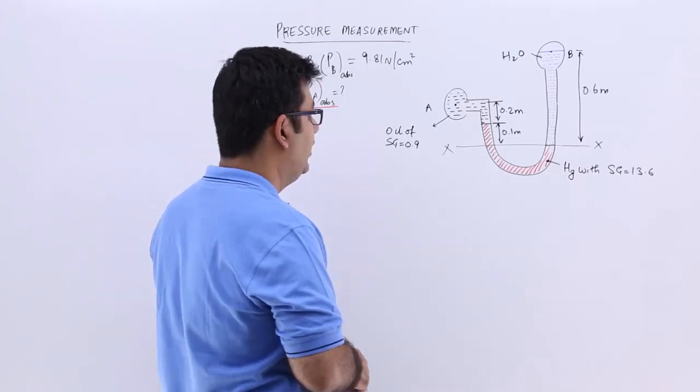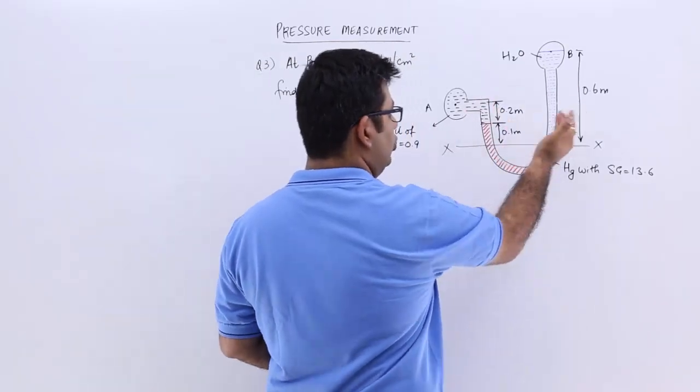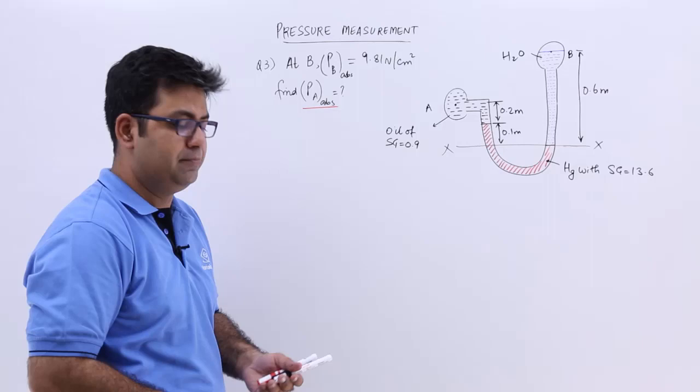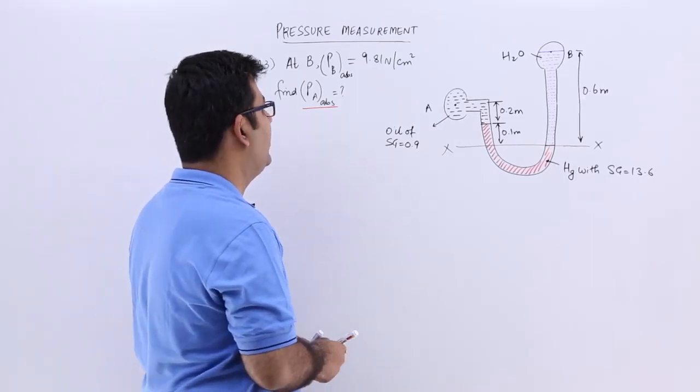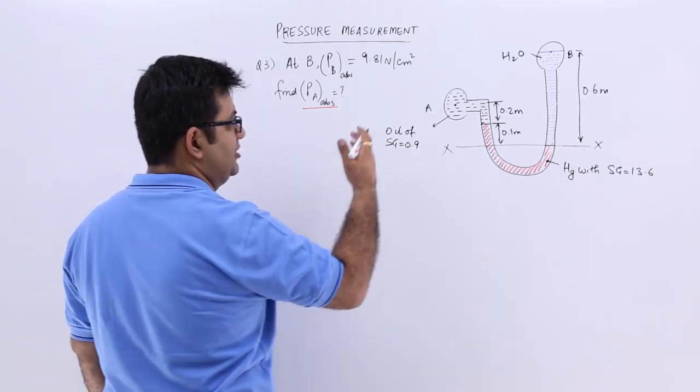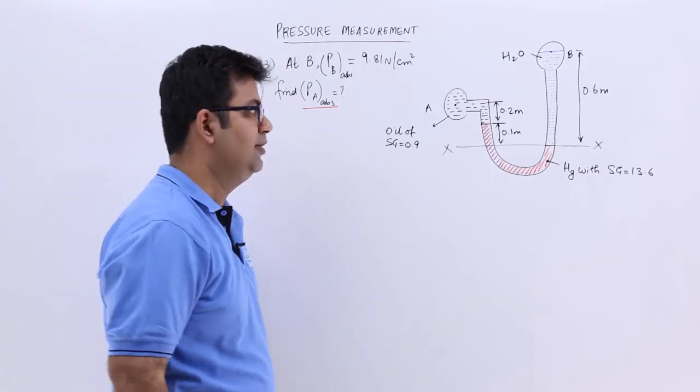Again, you have to equate the pressures on the two sides with respect to the datum. So let's find out first of all the pressure on the right hand side.